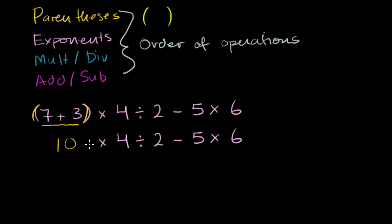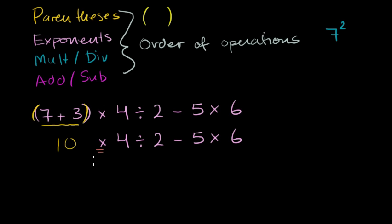There are no more parentheses, and I don't see any exponents — exponents would look like a small number in the top right, like 7 squared. So we move to multiplication and division. We have a multiplication, a division, and another multiplication. When multiple operations are at the same level, you go left to right. So we'll do 10 times 4 first, then divide by 2, and separately handle 5 times 6 before the subtraction.